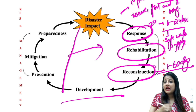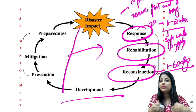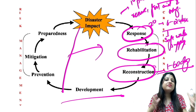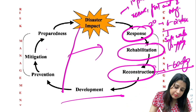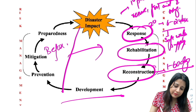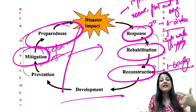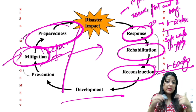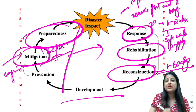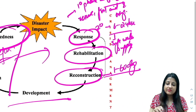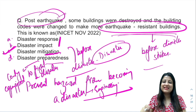So post earthquake the buildings were destroyed, we learned from that, and henceforth buildings are made earthquake resistant through new building codes — that is before the disaster. That is mitigation and preparedness. It is specifically mitigation and not preparedness because we are using an engineering modality here. So the answer is disaster mitigation.